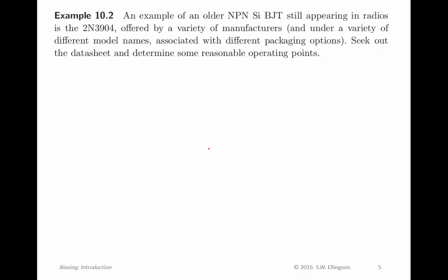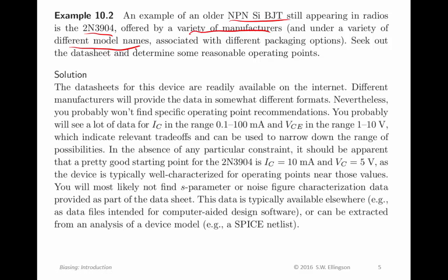Here's another example. An older NPN silicon BJT which still commonly appears in radios in all kinds of forms is the 2N3904. This transistor has been around for many decades and it appears in many different form factors. In fact, in some form factors it goes by a different name but underneath it's still a 2N3904. So it's a transistor that's worth knowing about. It's offered by a variety of manufacturers and under a variety of model names as I just mentioned.